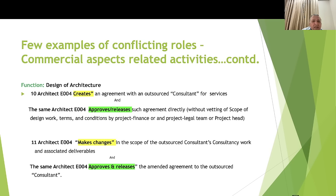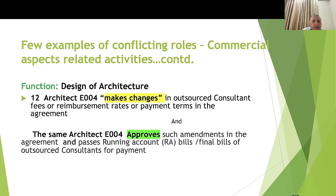Example ten: Architect number four creates an agreement with an outsourced consultant for services and approves or releases that agreement directly without vetting the scope, design work terms, and conditions by the project finance, project legal team, or project head. Example eleven: Architect number four makes changes in the scope of outsourced work, BOQs, or specifications and deliverables, and himself approves or releases the amended agreement with the outsourced consultant.